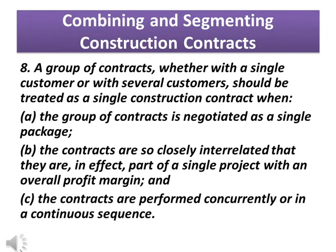Para 8: A group of contracts, whether with a single customer or with several customers, should be treated as a single construction contract when: A) the group of contracts is negotiated as a single package; B) the contracts are so closely interrelated that they are, in effect, part of a single project with an overall profit margin; and C) the contracts are performed concurrently or in a continuous sequence.